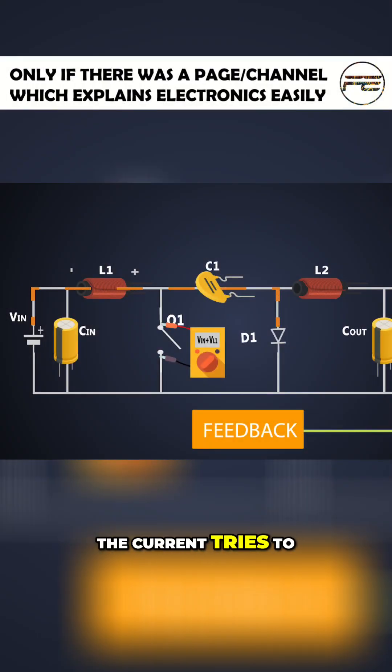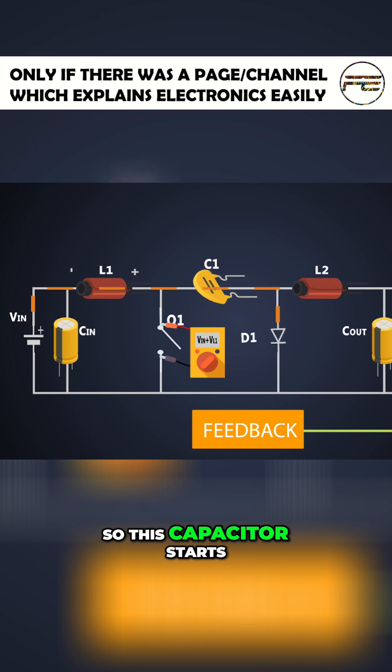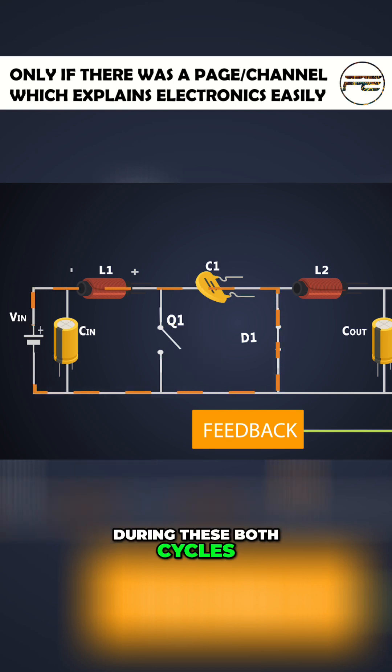Due to that, the current tries to flow and complete the circuit. So, this capacitor starts charging by this inductor and the diode D1 gets forward biased. During these both cycles, there is no output power provided to the load.